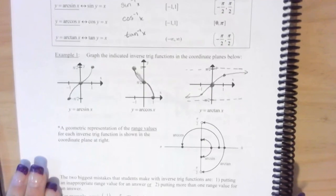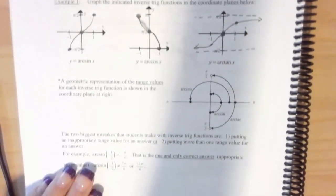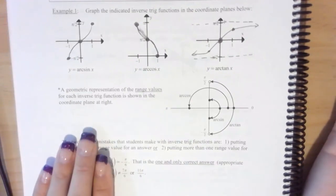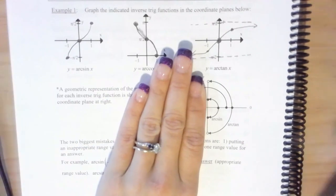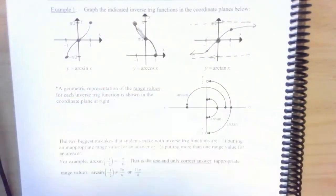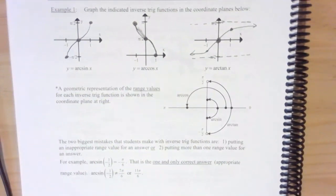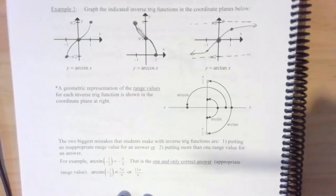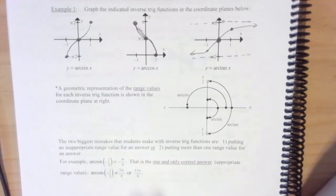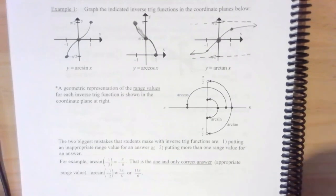This is a better view of how we use the unit circle. Hopefully your teacher told you to cover certain quadrants. For arc sine, cover the second and third quadrant and only look at the first and fourth. The same applies for arc tangent inverse. For cosine we cover the third and fourth. The two biggest mistakes students make are putting the wrong range value or putting more than one range value for the answer.